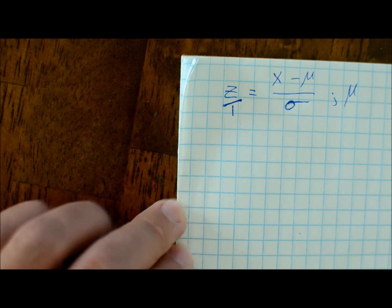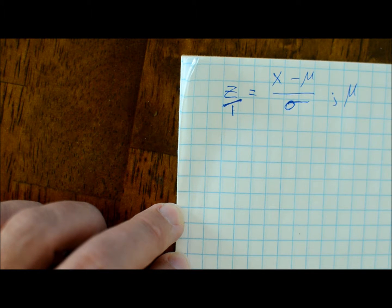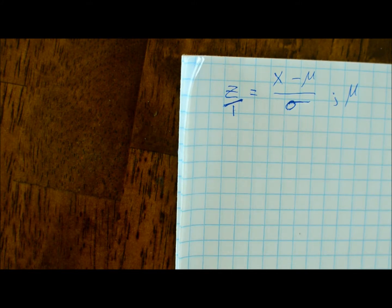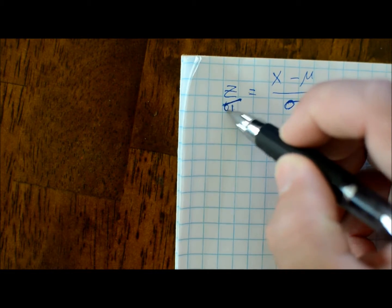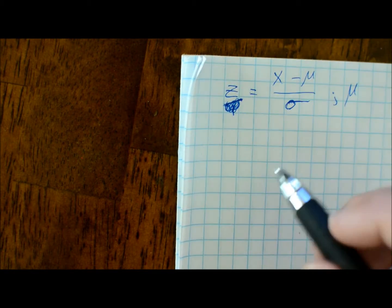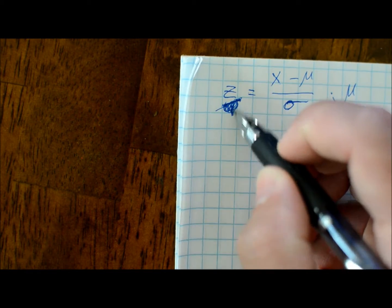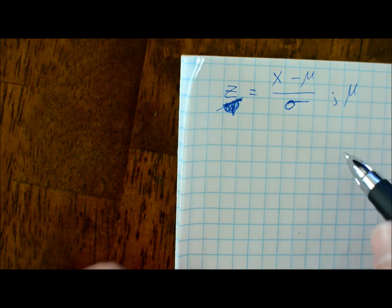Alright, so this one reads: solve the formula for the specified value. You've got z equals x minus μ over σ, and you're solving with respect to μ.